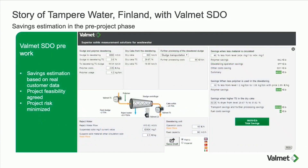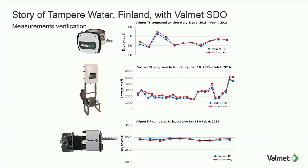When we start an SDO project, we first look at payback using our return-on-investment tool. We sit down with the customer, look at their costs, include the cost of equipment, and come up with an annual saving based on good data. In the case of Tampere Wastewater in Finland — one of our reference sites — at the beginning of the project we came up with a saving of around £84,000 per year. We then go into a verification period for the measurements, typically two months, during which the technology was working well against laboratory results, and the customer was very happy with performance.